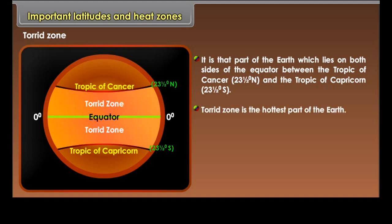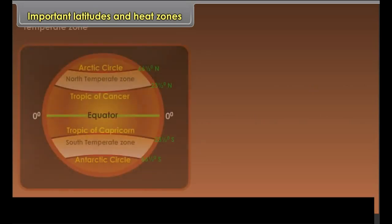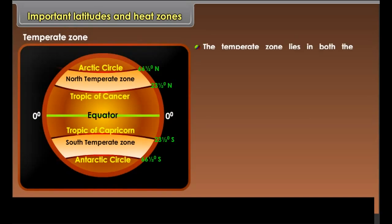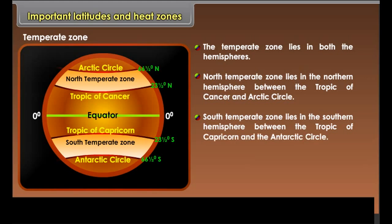The Torrid Zone is the hottest part of the Earth. This zone receives the maximum amount of heat throughout the year because the rays of the sun fall vertically on this zone. The Temperate Zone lies in both hemispheres. The north temperate zone lies in the northern hemisphere between the Tropic of Cancer and the Arctic Circle. The south temperate zone lies in the southern hemisphere between the Tropic of Capricorn and the Antarctic Circle.